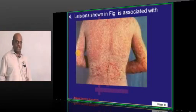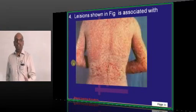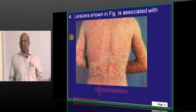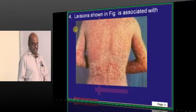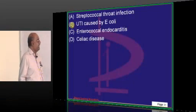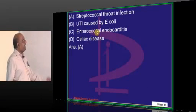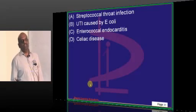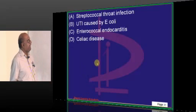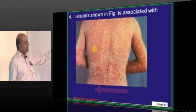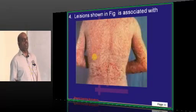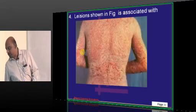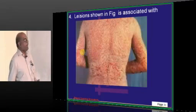Now you are seeing scaly lesions — this is called guttate psoriasis. Guttate psoriasis is typically a consequence of a previous streptococcal throat infection. This is what you have to basically remember.